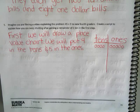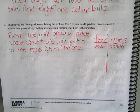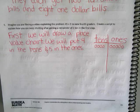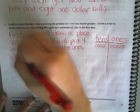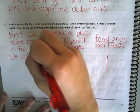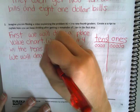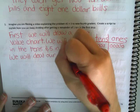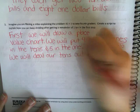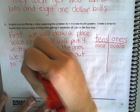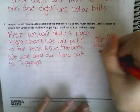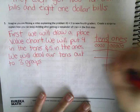Then what? How many groups are we dealing them out to? Three. So let's write: we will deal our 10s out to three groups — one group, two groups, three groups.